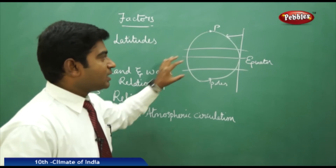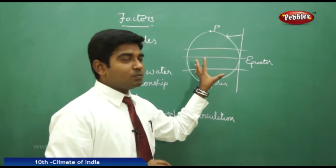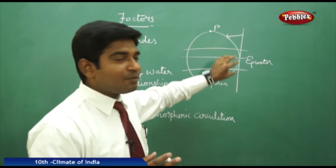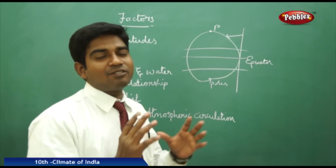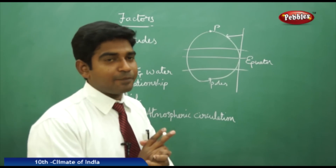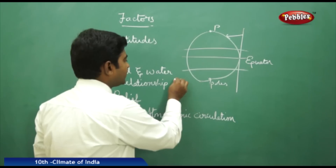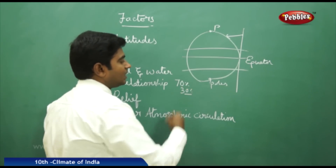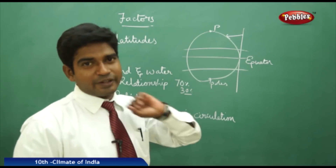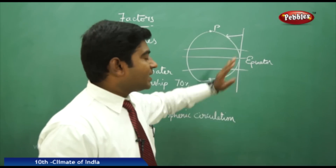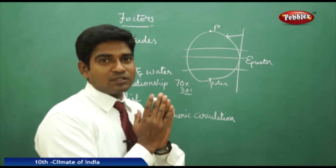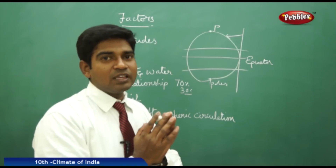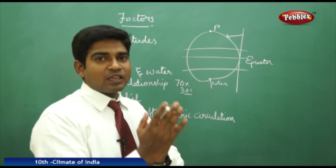The next factor is land and water relationship. Looking at the globe, three parts are filled with water and only one part is covered with land — nearly 70% of the earth is covered with water and about 30% is covered with land. The lands which are nearby to water bodies experience different conditions.